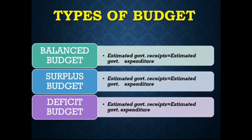The last one is deficit budget. When government expenditure exceeds government receipts in the budget, the budget is said to be the deficit budget. These are the three types of budget discussed in your textbook. The questions are very easy and direct — sometimes the examiner directly asks the three types of budget and the difference between them.